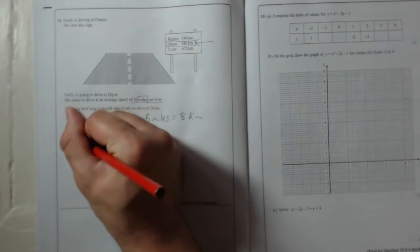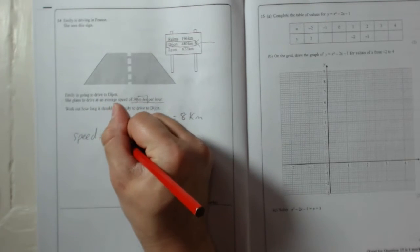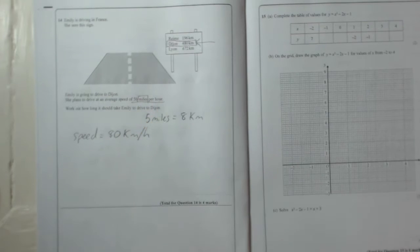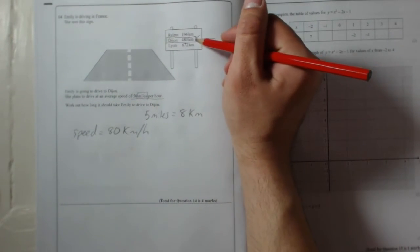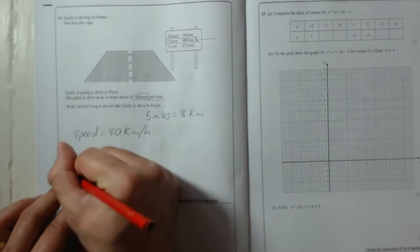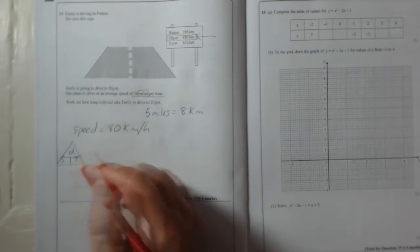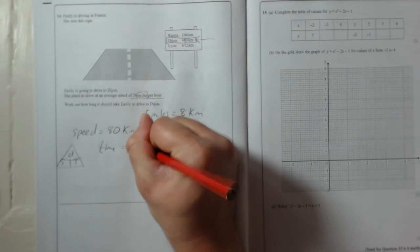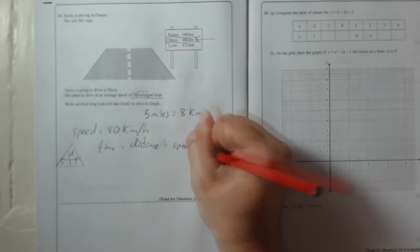Okay, so speed then is 80 kilometres per hour. And then we've got the distances over there. So speed equals distance over time, then time is distance over speed. Divided by speed. Remember over means divide.